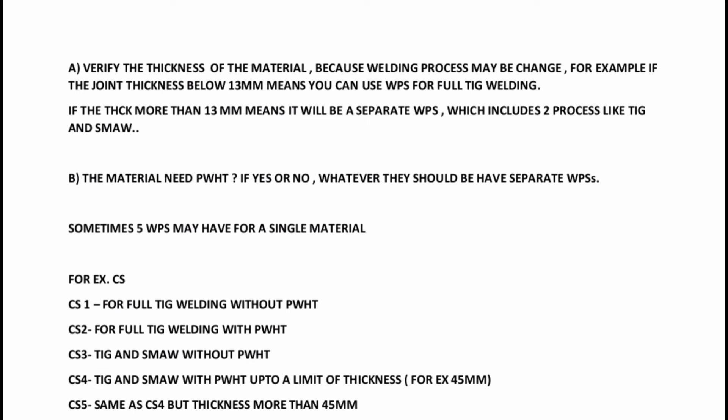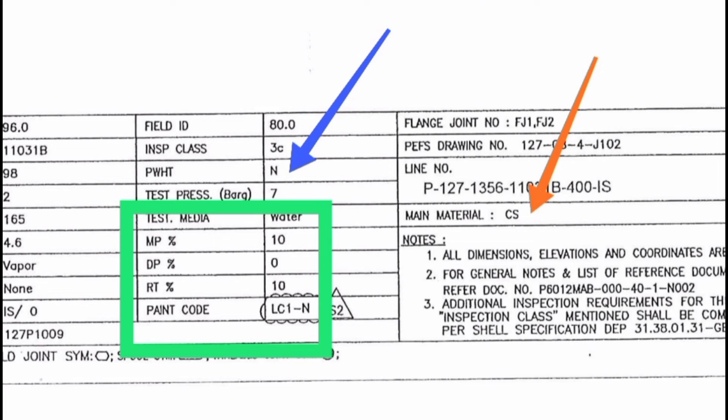For example, we have WPS codes: CS1, CS2, CS3, CS4, CS5 — these are the carbon steel units. CS1 refers to full TIG welding, which is not a PWHT material. If it is not a PWHT material, it is labelled CSR. If it is blue color, it is a PWHT material.